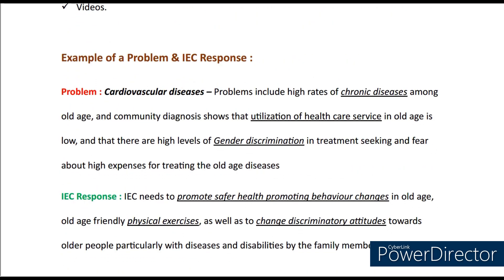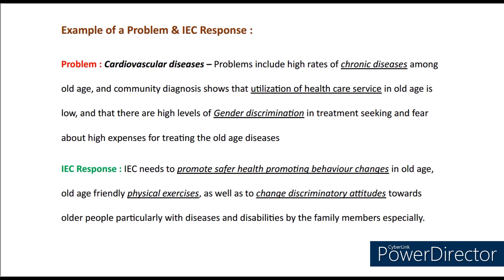Now let's understand this with an example, given for both the problem and the possible IEC response. The problem is cardiovascular diseases among old age people. It includes high rates of chronic diseases, low utilization of healthcare services in old age, high levels of gender discrimination in treatment seeking, and fear about high expenses for treating old age diseases. The possible IEC response could be to promote safer health-promoting behavior changes, friendly physical exercises, and to change discriminatory attitudes towards older people, particularly with diseases and disabilities, by family members especially.